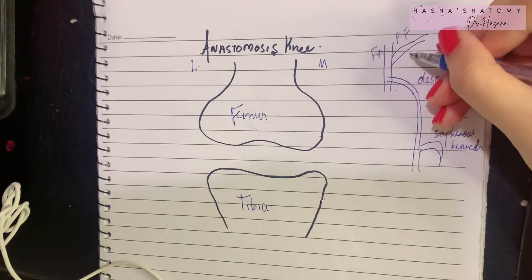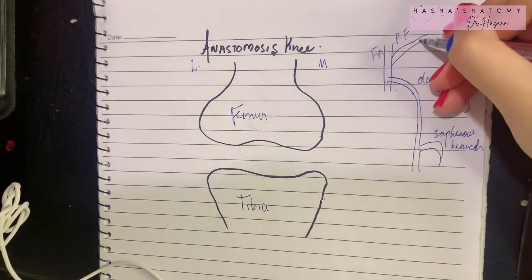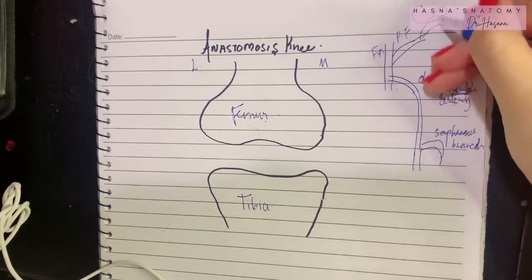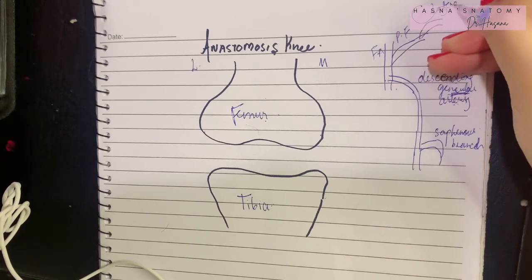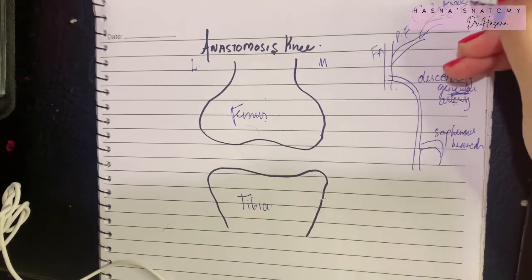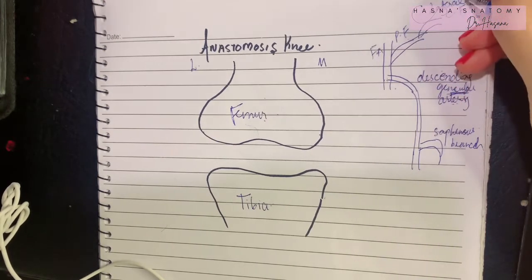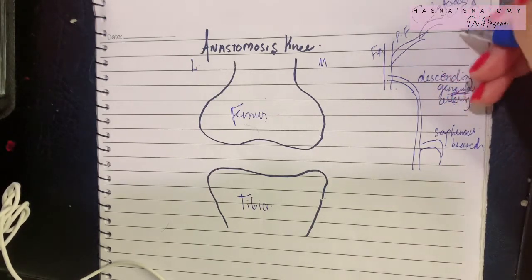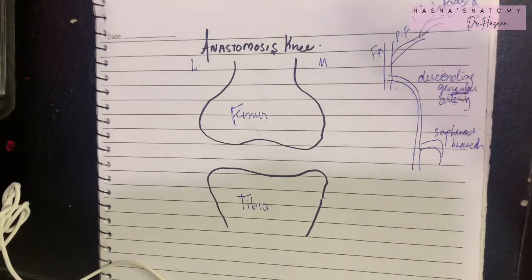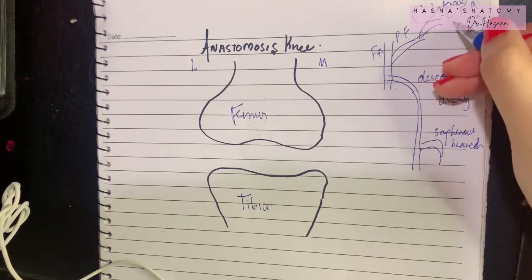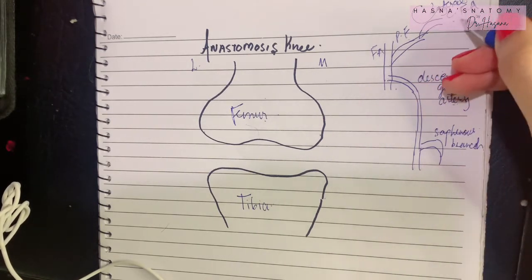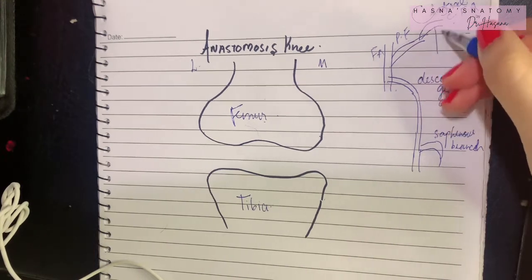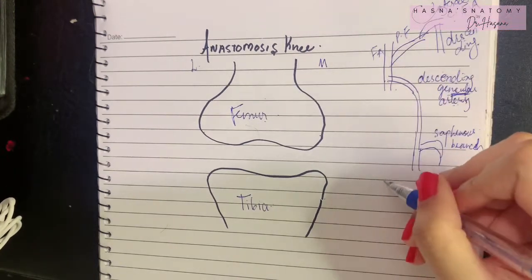The femoral artery gives the profunda femoris artery, which is a very major branch. The profunda femoris artery then gives the medial circumflex femoral and the lateral circumflex femoral arteries. The lateral circumflex femoral artery gave its ascending branch and a transverse branch to the trochanteric and cruciate anastomosis, and it also has a descending branch.